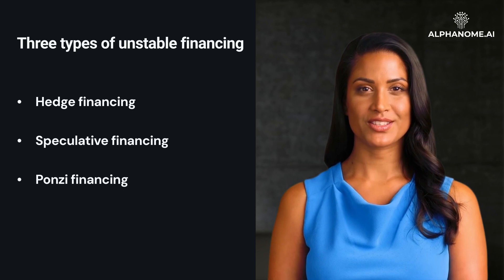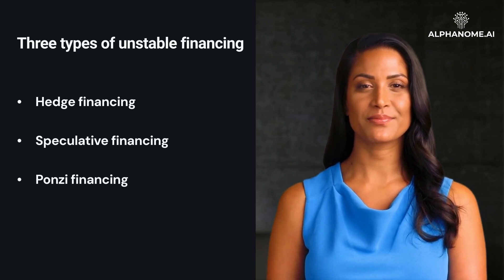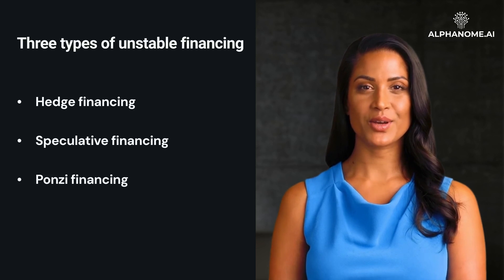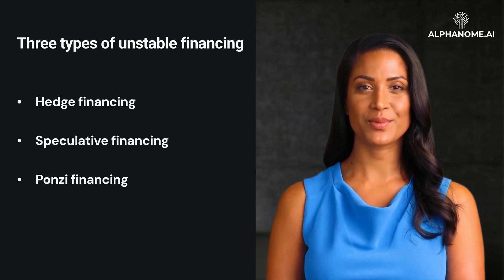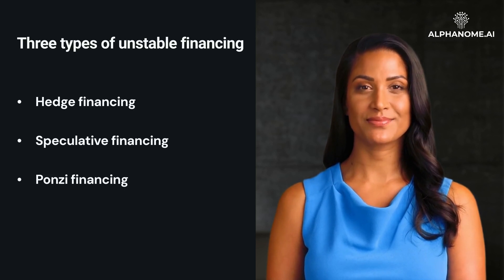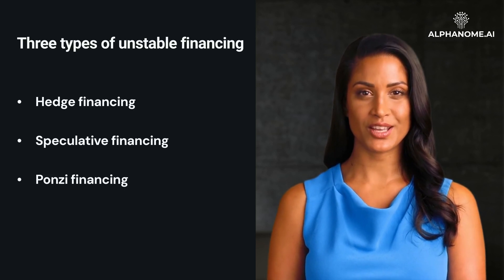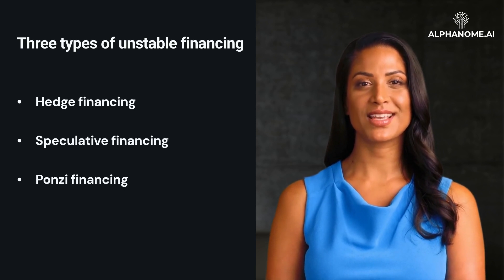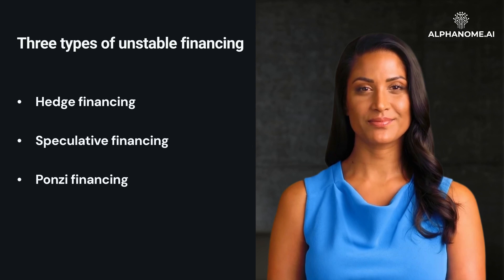As an expansion progresses, firms switch from hedge to more speculative financing, and the proportion of Ponzi financing also increases. The financial system becomes more interconnected and dependent on continued economic growth. This builds up instability until even a small shock can cause defaults and a rush for liquidity. Lenders stop providing new financing, leading to declines in asset prices, job losses, and an economic contraction. This is what Minsky called the Minsky Moment.